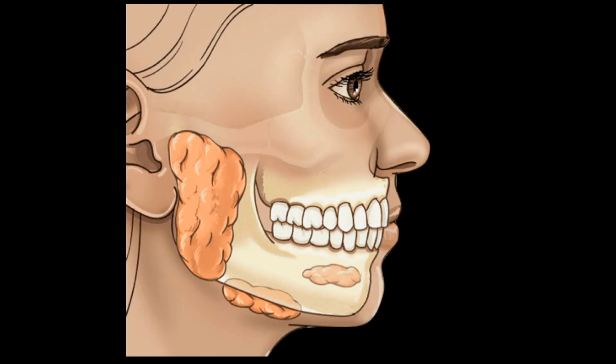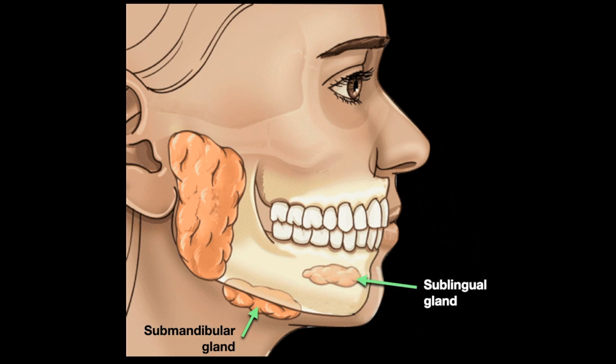There are three major salivary glands and hundreds of minor salivary glands in the body. The major salivary glands are the submandibular salivary gland, sublingual salivary gland, and the parotid gland. The submandibular gland is located beneath the lower jaw. The sublingual gland is located under the tongue, and the parotid gland is the largest one, located in front and below the ear. The salivary glands produce saliva, which is essential for chewing food, swallowing, speech, and digestion.